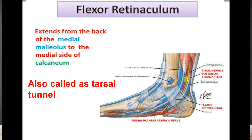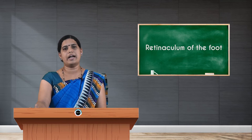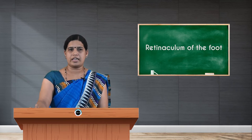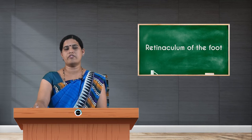The structures passing beneath the tarsal tunnel or beneath the flexor retinaculum can be remembered by the mnemonic Tom Dick and Harry. Tom refers to tibialis posterior, Dick refers to flexor digitorum longus, A and N refer to the artery and nerve of the posterior compartment — that is posterior tibial artery and tibial nerve — and Harry refers to flexor hallucis longus.